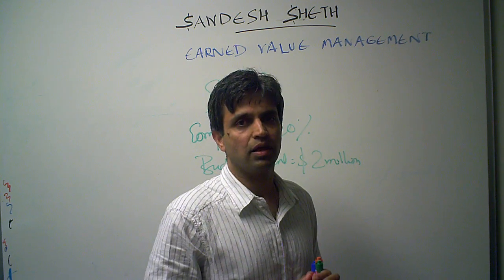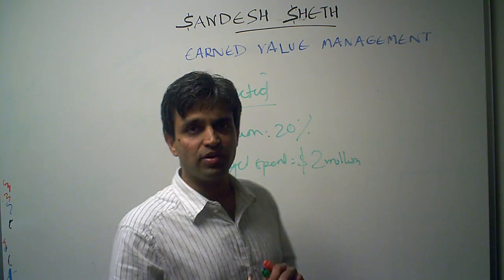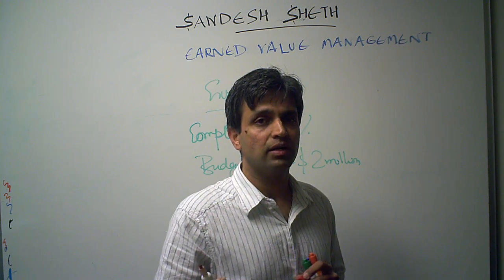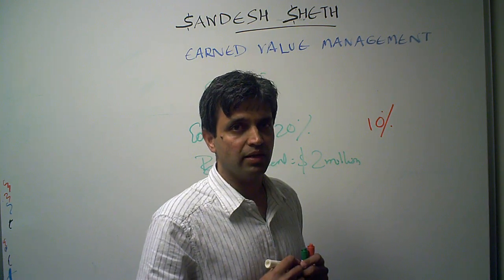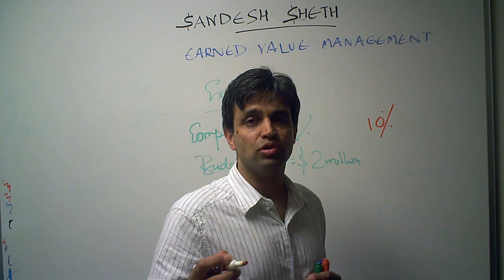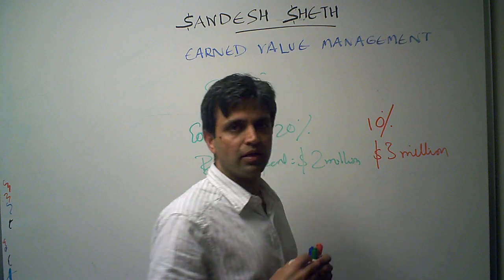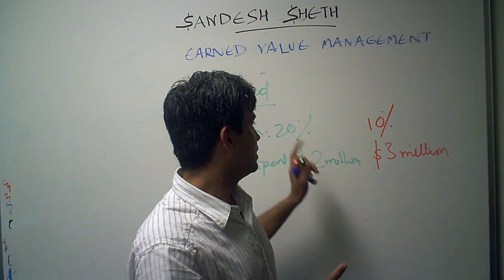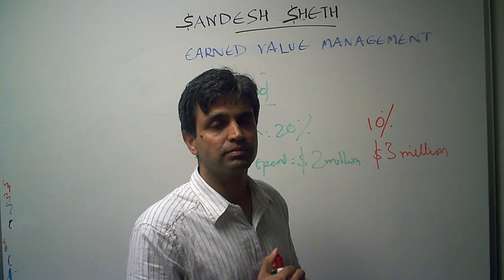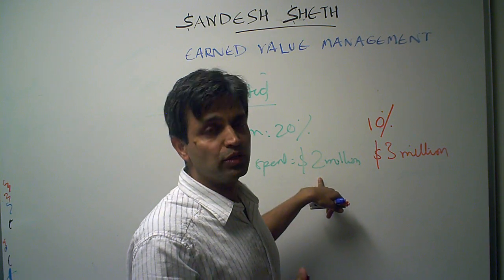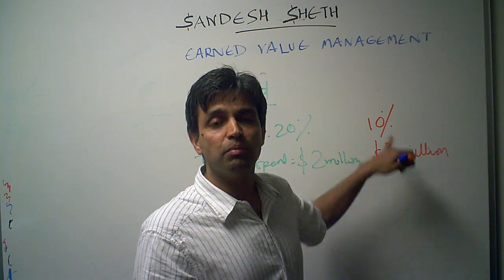But in reality, this is not true. After two months, I discover that instead of completing 20% of the work, I only completed 10% of the work. And instead of spending $2 million, I have actually spent $3 million. So I was supposed to be at 20% completion, whereas I am at only 10%, and I should have spent $2 million to complete that 20%, whereas I have spent $3 million to complete just 10%.